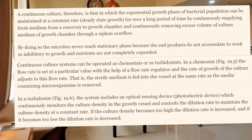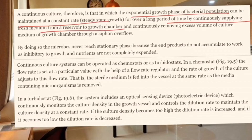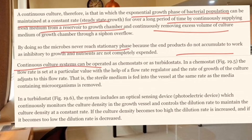For continuous culture, we need to maintain bacterial exponential growth for a long time. For this, we continuously supply fresh nutrients from feed chambers, similar to batch culture conditions, so that microbes do not reach stress. If we maintain continuous culture, there are two methods: the Chemostat method and the Turbidostat method.